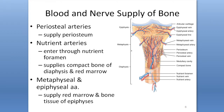We have periosteal arteries running along the periosteum on the outer edge, nutrient arteries going through the medullary cavity, and deep within the bones we have metaphyseal and epiphyseal arteries feeding the epiphysis and metaphyseal area. All of these bones are loaded with blood vessels. I'm not going to ask you questions about the different types of arteries — I just want you to realize that bones have a lot of blood supply.